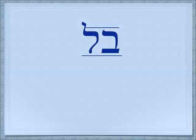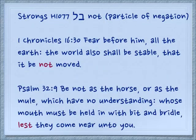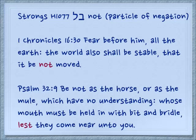The two letters we're doing today are Bet Lamed. Bet Lamed together does spell a word, and it's usually translated as 'not' or some other particle of negation. First Chronicles 16:30: 'Fear before him all the earth. The world also shall be stable that it not be moved.' Psalm 32:9: 'But not as the horse nor as the mule which have no understanding, whose mouth must be held in with bit and bridle, lest they come near unto you.' In other words, you don't want them to come near you.